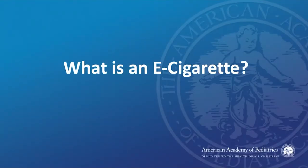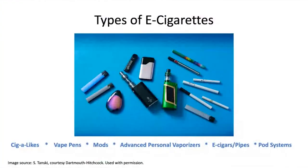What is an e-cigarette? Everyone listening has at least seen these before, whether in your patients, walking down the street, or in gas stations or vaping shops. As you can see from this picture, there are many different types — everything listed in this picture is a type of e-cigarette. They come in literally all kinds of shapes and colors. They're called cigalikes, vape pens, mods, APVs or advanced personal vaporizers, e-cigars, e-pipes, pod systems. The nomenclature and types are ever-growing.